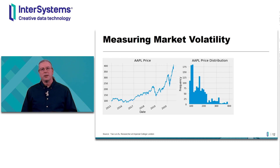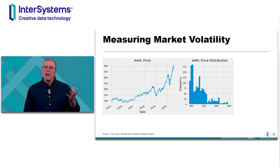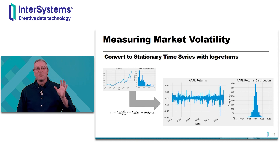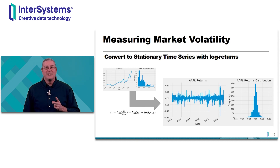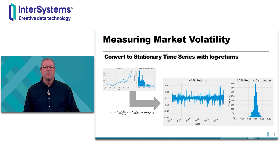For our case study, we're measuring market volatility of Apple stock. Here's a chart of Apple stock price over the last few years. On the left we see the chart of Apple stock price, and on the right we see its frequency distribution, which tells us that Apple stock is not stable — in fact, it's generating quite nice returns for investors. While that's great, many statistical techniques require what's called a stationary signal, meaning the signal is flat overall. One of the most common techniques to create a stationary signal from a real-world signal is to use log returns, also known as log differencing.